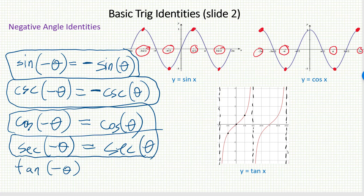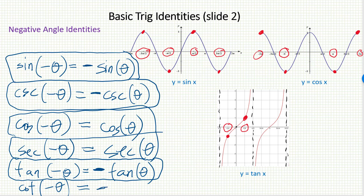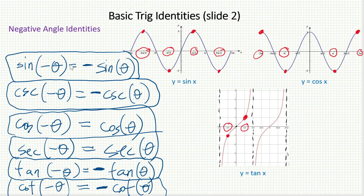For tangent, looking at the graph: pi over 4 goes up to 1, while its opposite negative angle goes down to negative 1. Tangent is an odd function, so it works just like sine: tangent of negative theta equals negative tangent theta. And of course that means cotangent will also work this way — cotangent of negative theta equals negative cotangent theta. Four of the trig functions are odd, giving a negative relationship between the two ratios. Only cosine and secant are even, where the two ratios match.